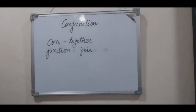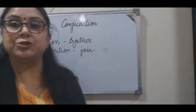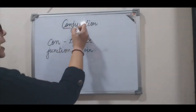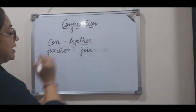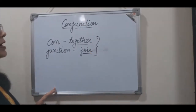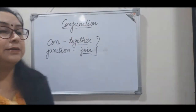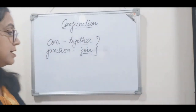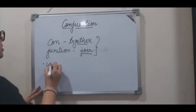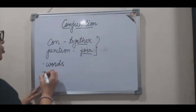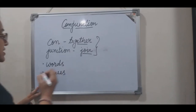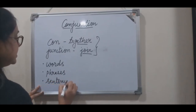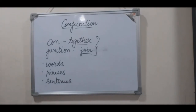When we look at the word 'conjunction,' we see it is a combination of two words — 'con' and 'junction.' Con means together and junction means join. So when these combine, conjunction gives the meaning of joining together. A conjunction is a word that joins words together, phrases together, and even sentences together.